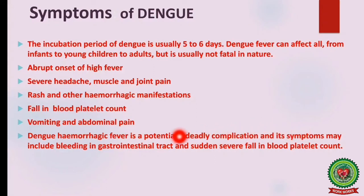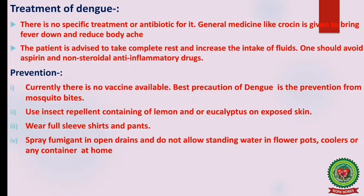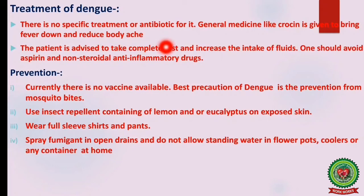Dengue hemorrhagic fever is a potentially deadly complication; its symptoms may include bleeding in the gastrointestinal tract and a sudden, severe fall in blood platelet count. Alarming signs include bleeding through the nose and gums, refusal to eat or drink, difficulty in breathing, reduced urination, and minute spots on the skin signifying bleeding within the skin.